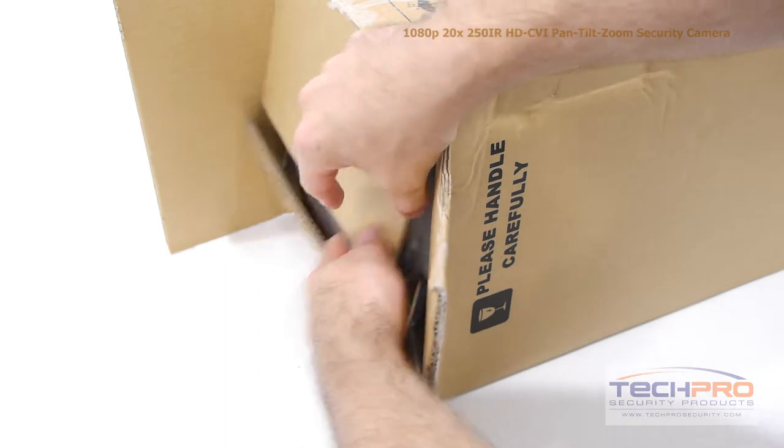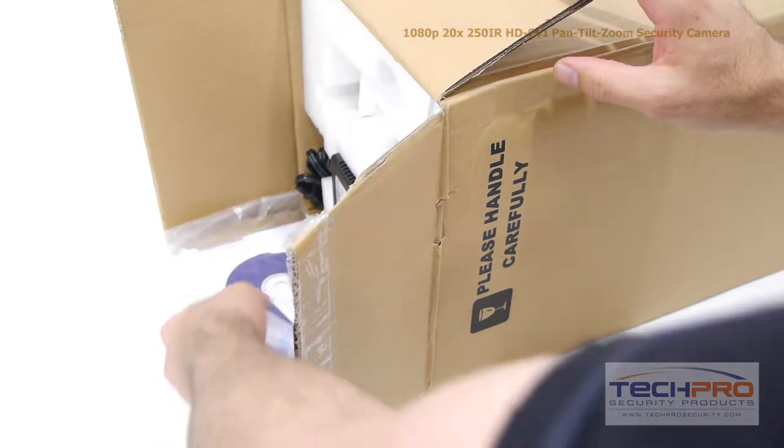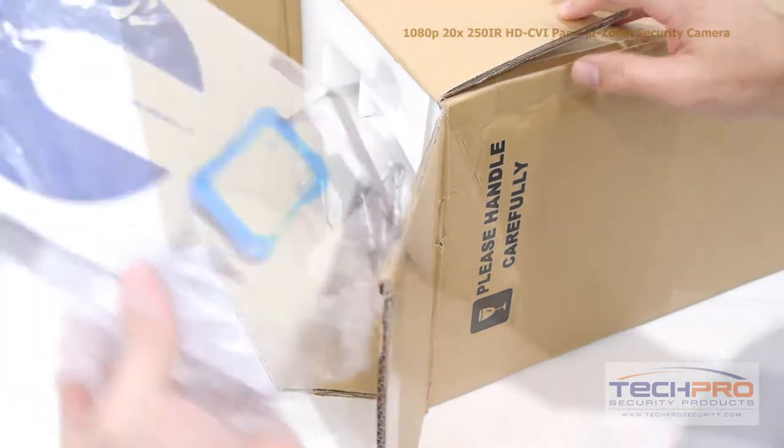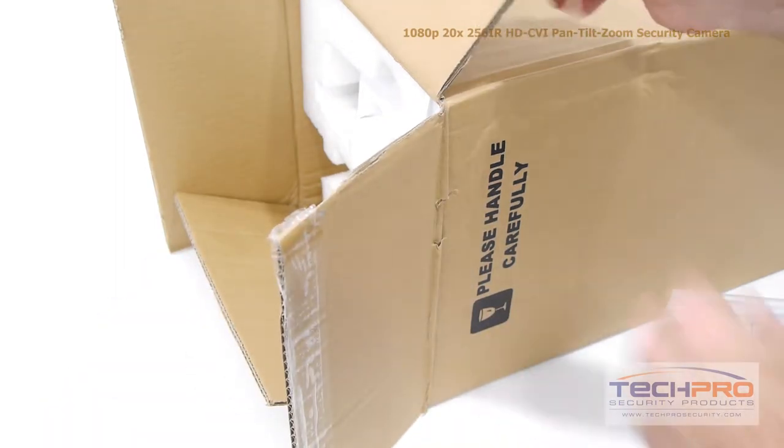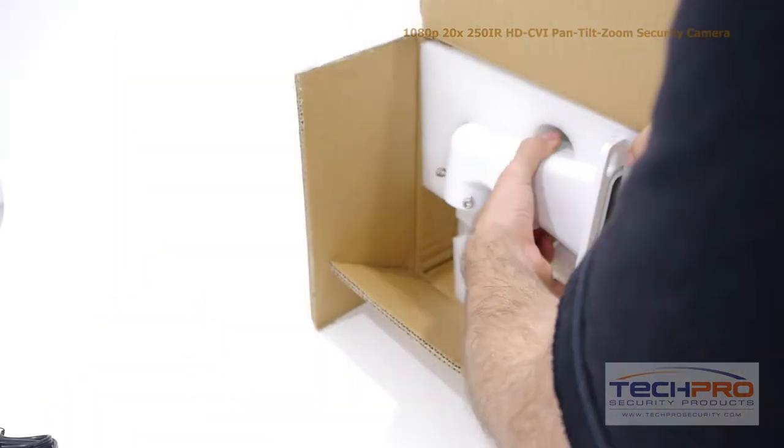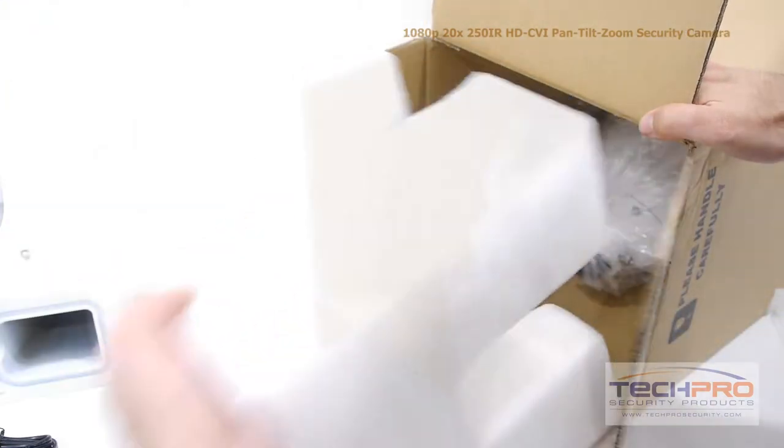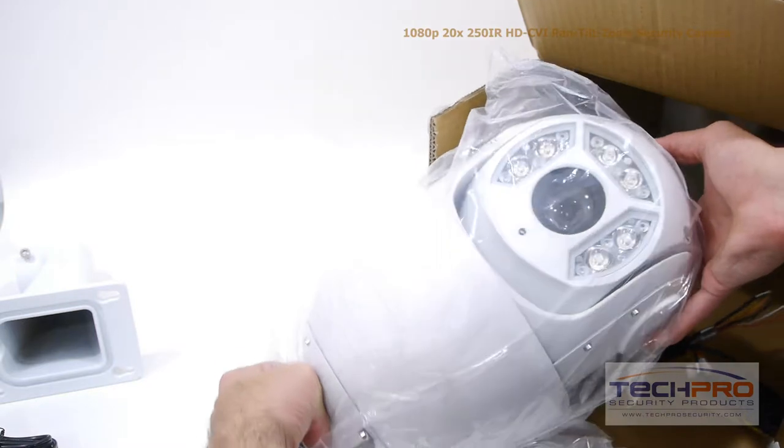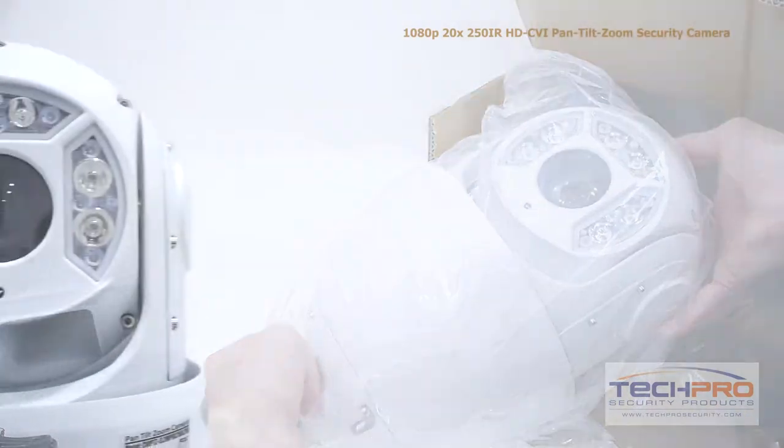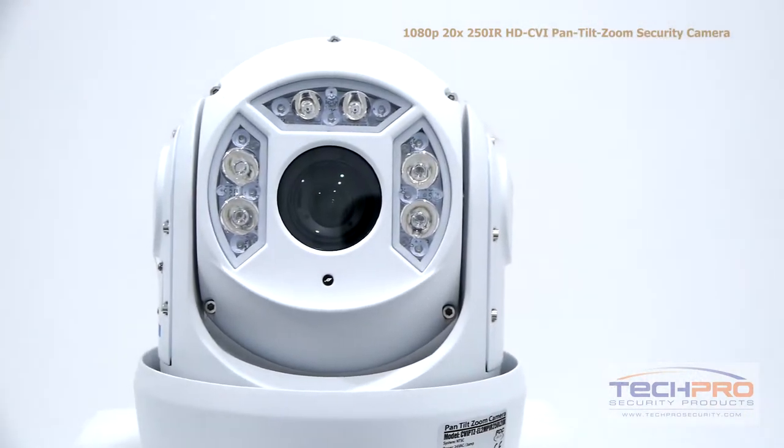This is our brand new 1080p 2 megapixel HD-CVI PTZ camera. This pan-tilt zoom camera can broadcast 2 megapixel or 1080p high-definition video over standard analog cable to an HD-CVI compatible DVR. The video, audio, and control of the PTZ features are all transmitted through the same video cable.